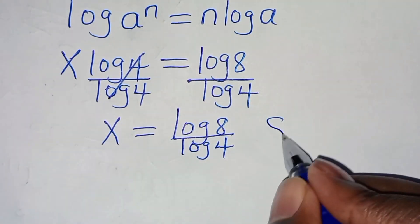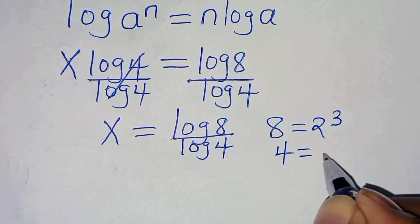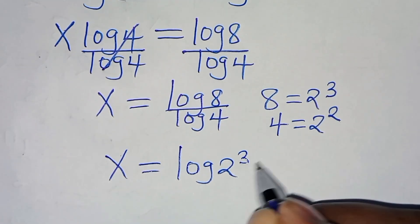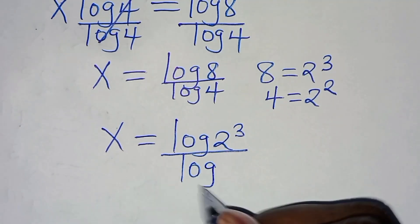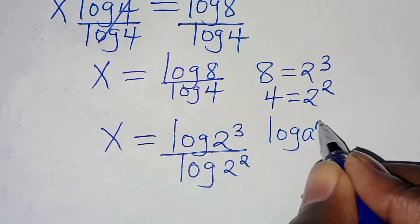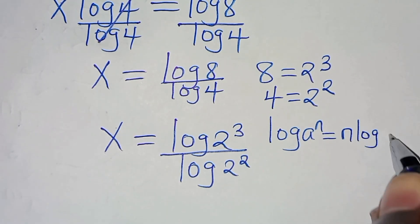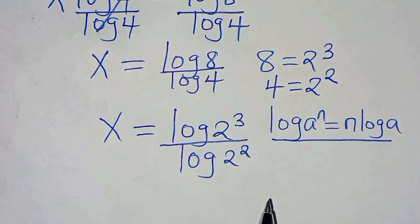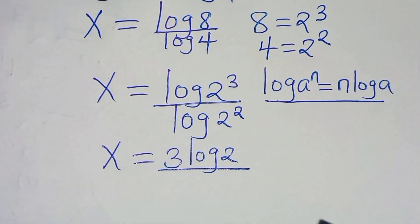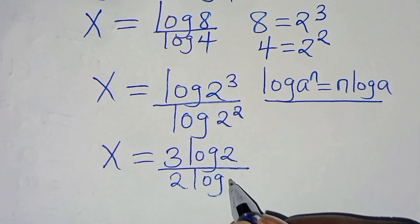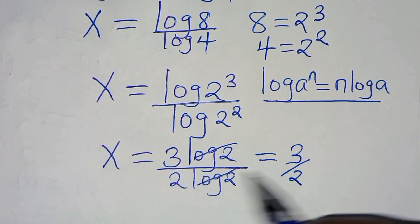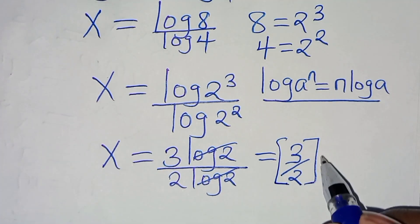We can express 8 as 2 to the power 3, and 4 as 2 to the power 2. This implies x equals log(2^3) divided by log(2^2). Applying the power rule of logarithm, log(2^3) becomes 3 log 2, and log(2^2) becomes 2 log 2. Simplifying, log 2 and log 2 cancel, so the solution is 3 over 2. Therefore x equals 3 over 2 by both method 1 and method 2.